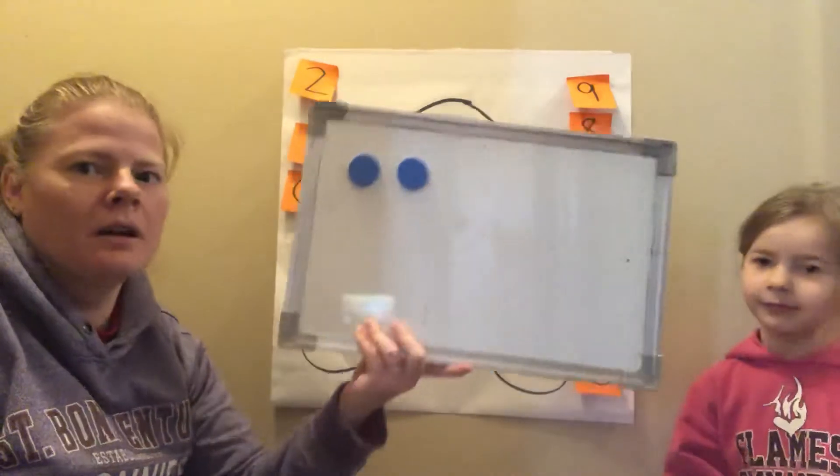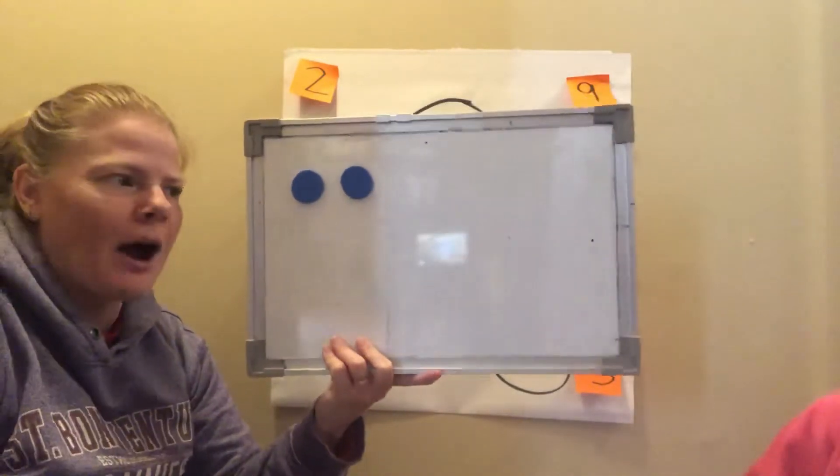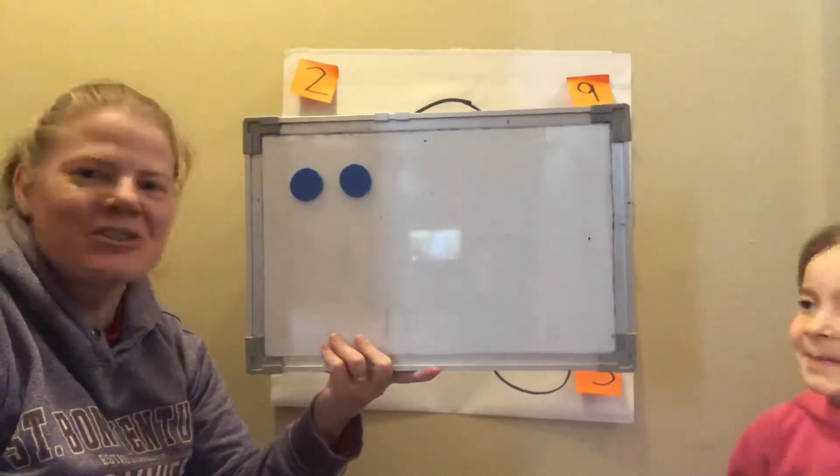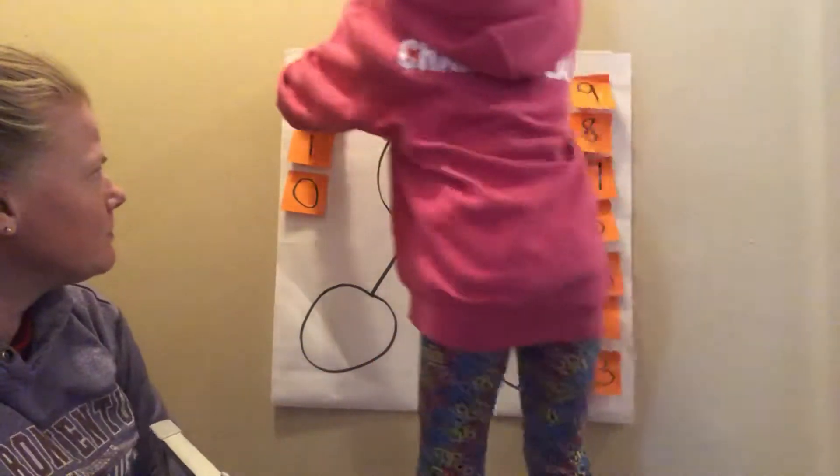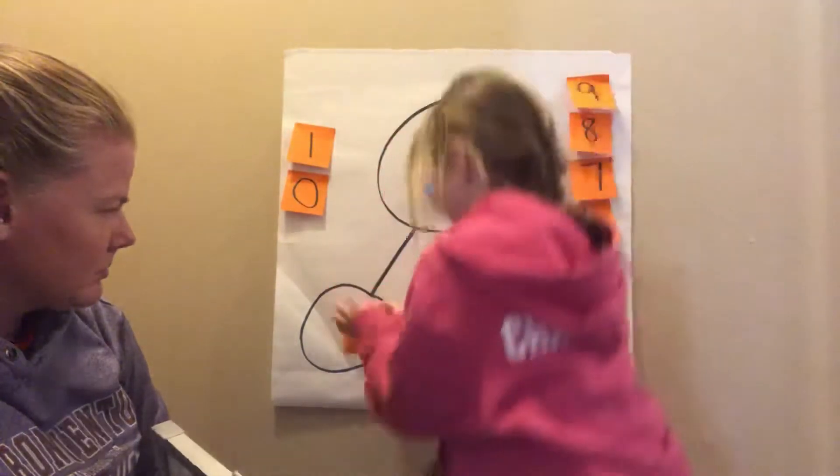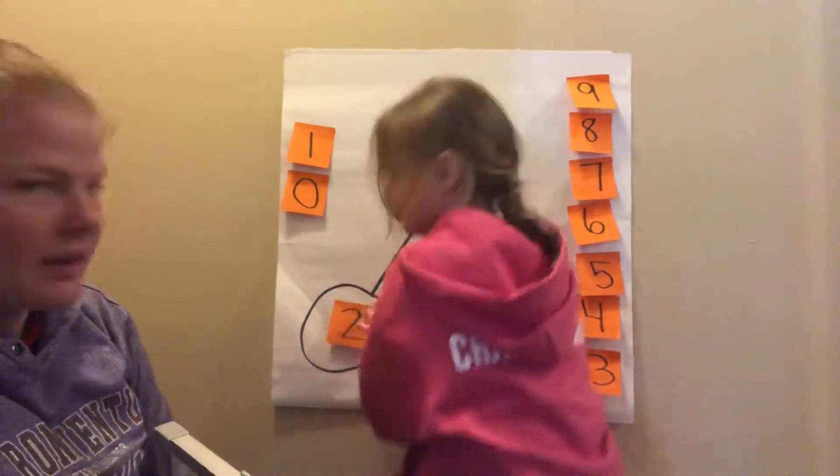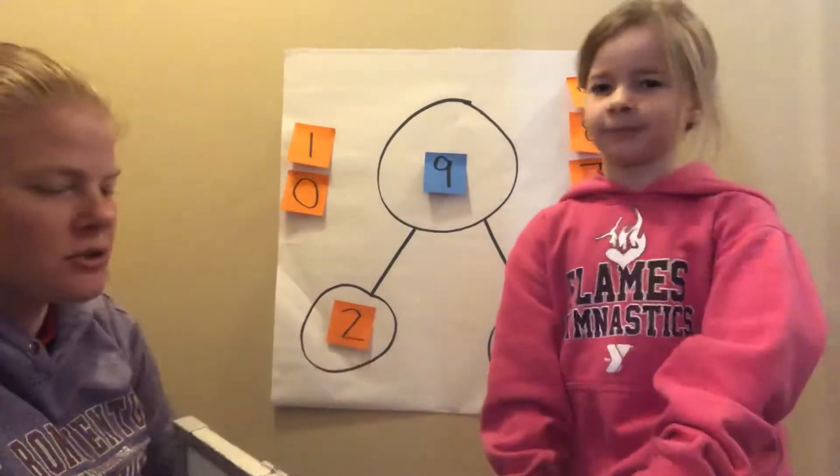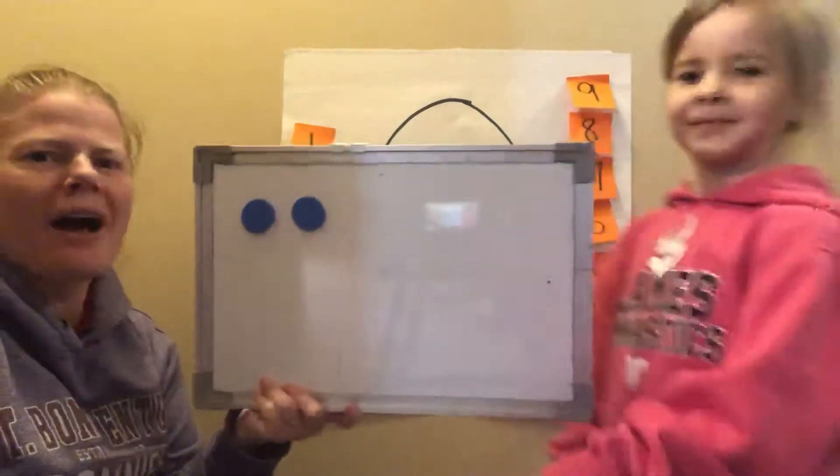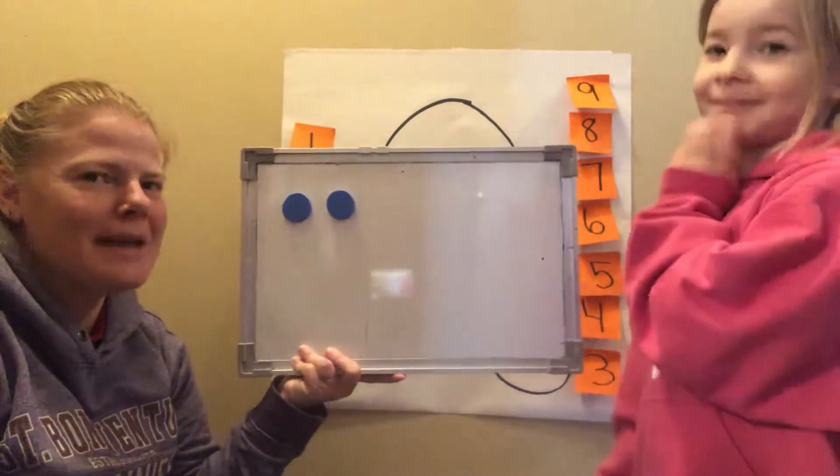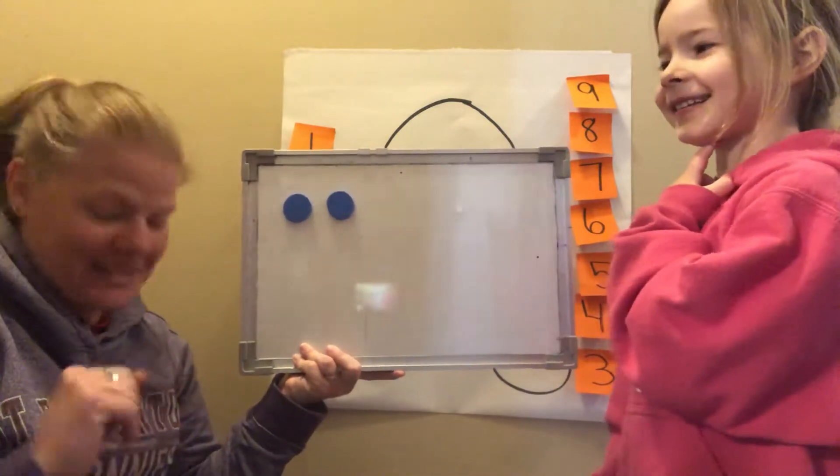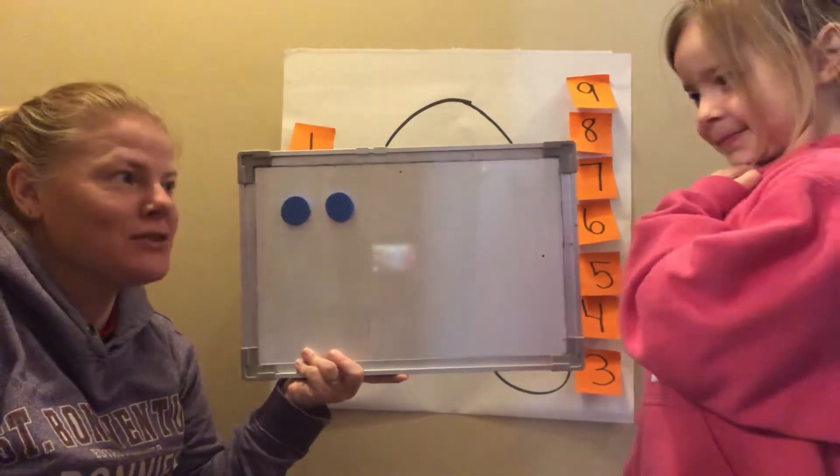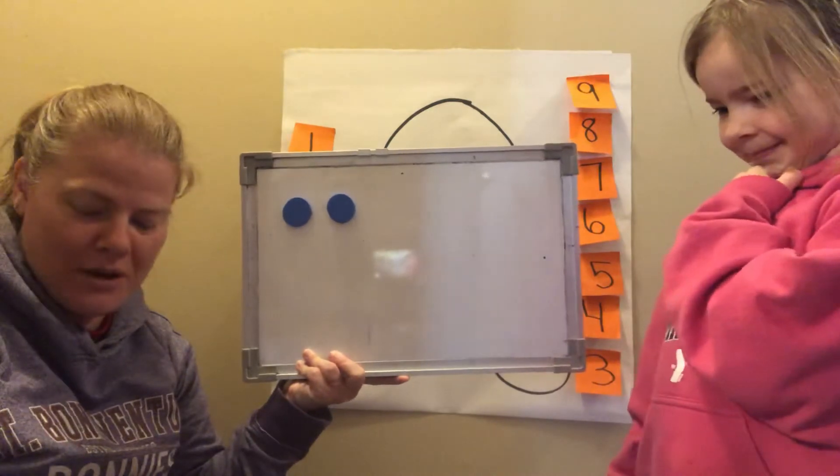Ooh, are you ready? Oh, how many are showing? Two. Just two. So Shelby's gonna put up her first part which is two. All right, she's got her first part up. That's two. How many are missing to make nine? Seven. She thinks seven. Let's find out. Let's see if she's right. Are you ready? Here we go.